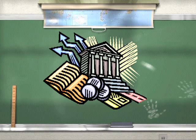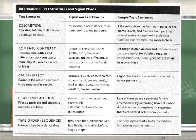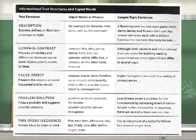Consider these types of text structures: description, compare-contrast, cause-effect, problem-solution, and time-order or sequence. If you explicitly alert students to these types of structures and the various key words that precede them, students can flip their brain switches to the right mode of thinking.